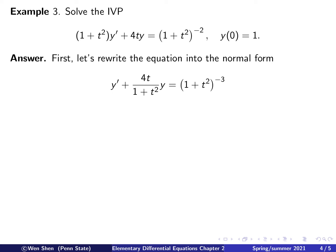Then we get this expression with 4t over 1 plus t squared in front of y, and (1 plus t squared) to the negative 3 on the right hand side. Now this is in the standard form, where p(t) is this function and g(t) is the right hand side.